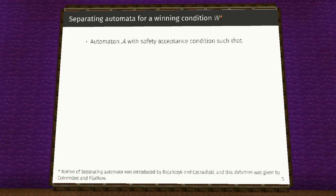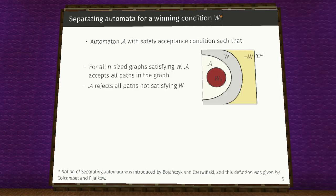Now we define what separating automata for a winning condition W is. It is just an automata A with safety acceptance condition such that it satisfies following two conditions. First, for all n-sized graphs satisfying W, A accepts all the path in the graph and second, A rejects all the path not satisfying W.